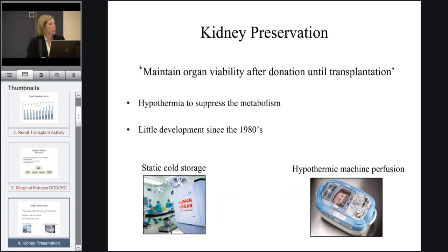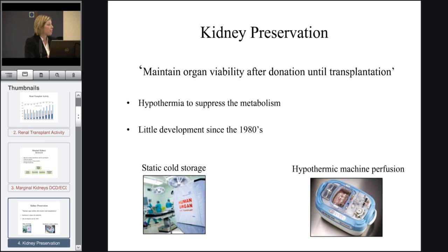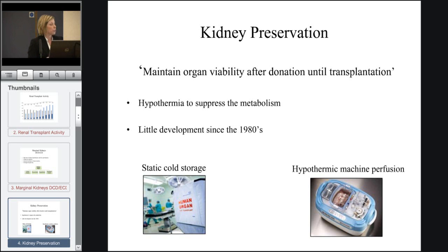Early graft dysfunction is caused by kidney injury, and kidney injury is caused by multiple factors. It's caused in the donors — this could be due to the donor health or the circumstances surrounding the death. Preservation — the way in which we preserve an organ or for how long we preserve it. Reperfusion — immediately after transplantation, when oxygenated blood is reintroduced into the kidney, we get an inflammatory response which causes damage. And also due to the recipient, as their health can affect early graft function.